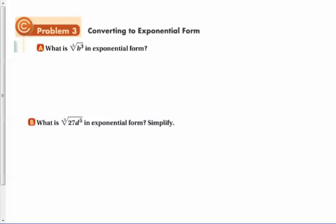Now, let's talk about converting to exponential form. So what is the 5th root of b cubed in exponential form? Well, what you do is you take b, and then that 3 is the numerator, and the 5 is the denominator. Literally, that simple. What is the cube root of 27d to the 5th in exponential form? And it just simplifies.